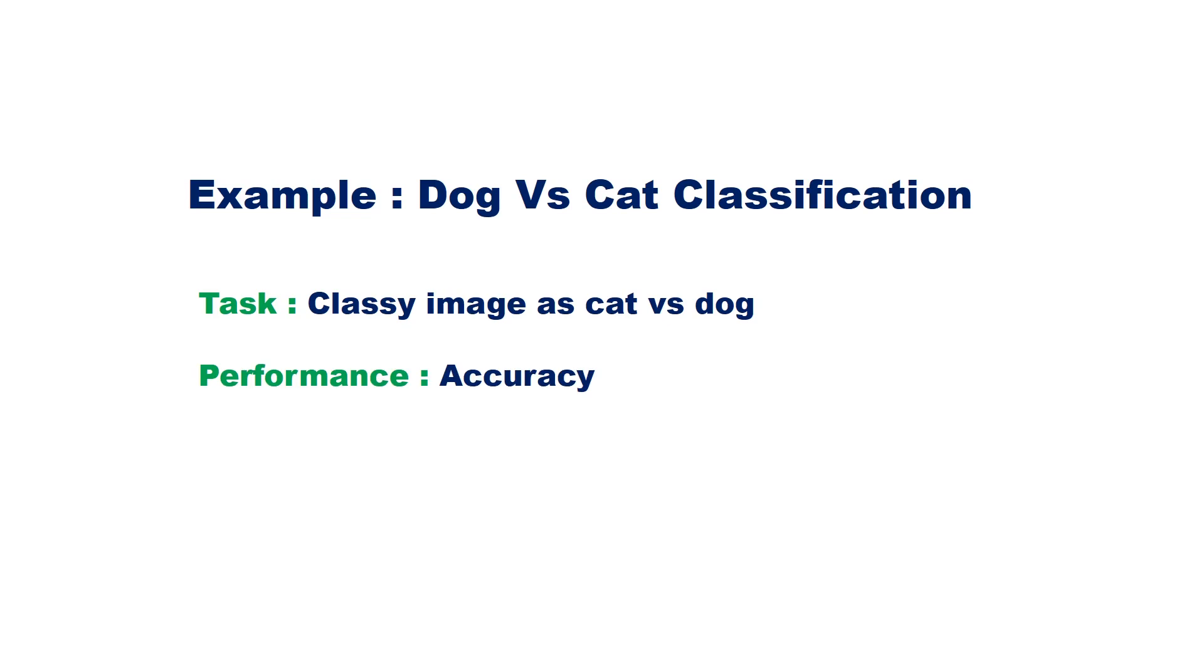We may consider accuracy as a performance measure—that is, how many of the images have been correctly classified. Experience here is the data given to the model, the set of images that has been correctly classified as cat and dog.